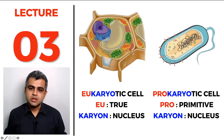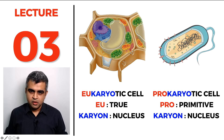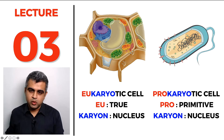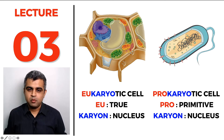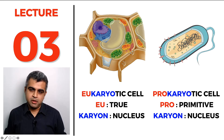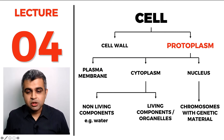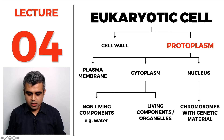In the third lecture, we also discussed prokaryotic versus eukaryotic cells. A eukaryotic cell has a true nucleus with a proper nuclear membrane, whereas a prokaryotic cell does not have a proper nuclear membrane. In lecture number four, we started talking about the eukaryotic cell and focused entirely on the nucleus.